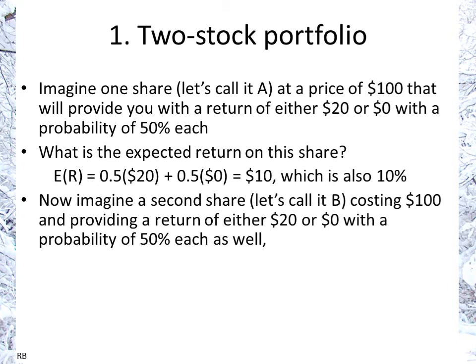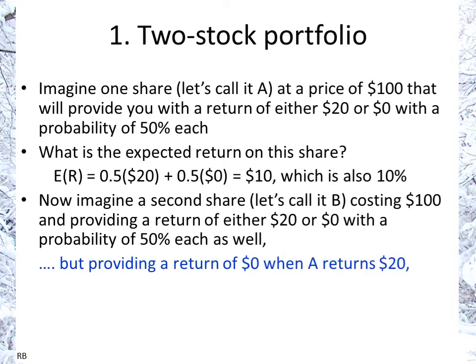Now let's imagine a second share, calling it B. Same idea — costs $100 and provides a return of either 20 or 0 with a 50% probability. What's the difference between these two shares? It will provide a return of 0% when A gives a return of 20%, and 20% when A gives 0%.